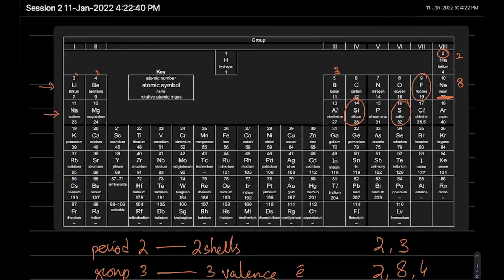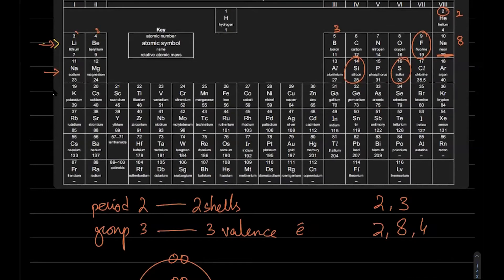Let's figure out the configuration of fluorine and sulfur. Fluorine is in group 7, period 2 — take 2 from helium and 7 in the second shell: configuration 2, 7. For sulfur: take 2 from helium, 8 from neon, and sulfur is the sixth element in period 3 — so configuration is 2, 8, 6.